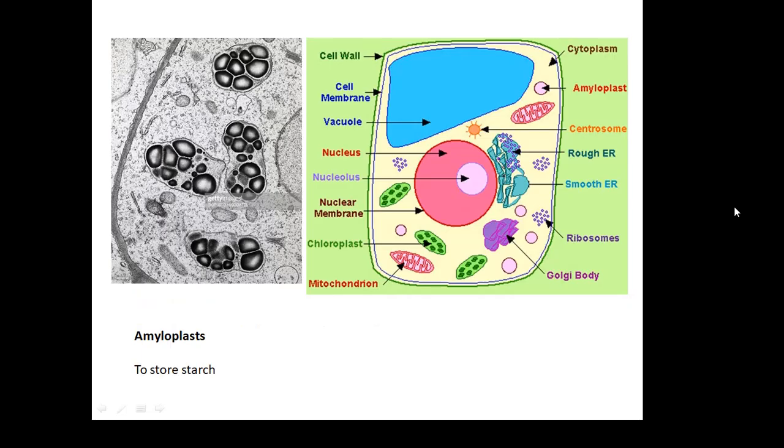Amyloplasts, and these store starch. This is where starch is stored inside the plant cell. Photosynthesis produces glucose. The glucose is converted into starch and stored in amyloplasts.